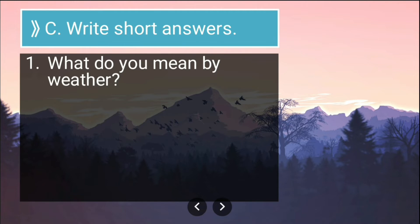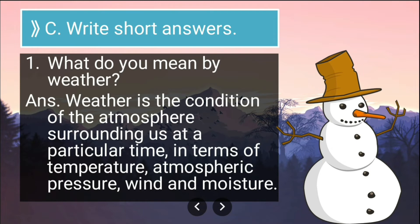Now let us write short answers. First: what do you mean by weather? The answer is — weather is the condition of the atmosphere surrounding us at a particular time, in terms of temperature, atmospheric pressure, wind, and moisture.